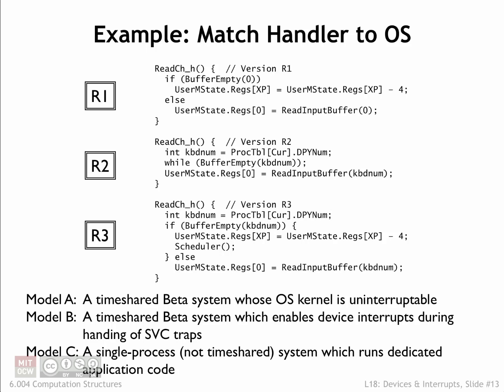Here's an old quiz problem we can use to test our understanding of all the factors that went into the final design of our read key SVC code. We're considering three different versions of the read key SVC code, all variants of the various attempts from the previous section. And there are three types of systems — models A, B, and C. We've been asked to match the three handlers to the appropriate system.